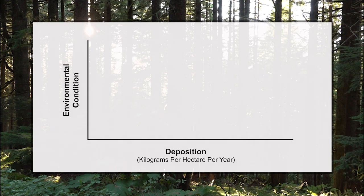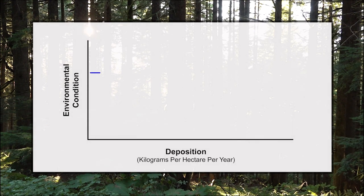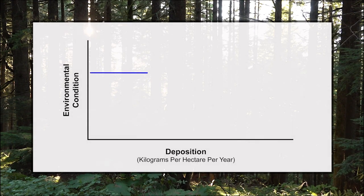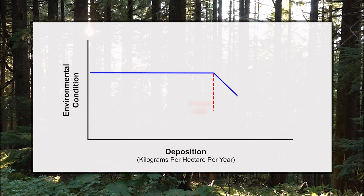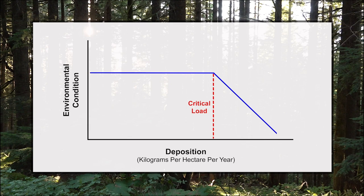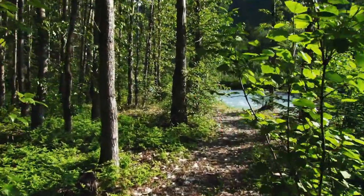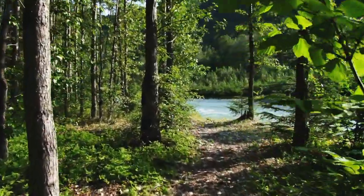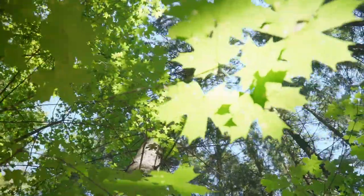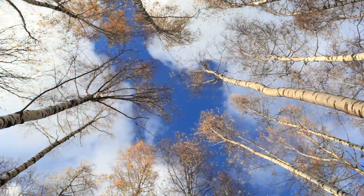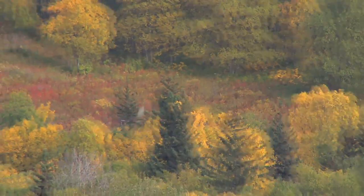This brings us to the concept of critical loads, which are used to identify when an ecosystem, or a part of an ecosystem, begins to experience harm from sulfur deposition, nitrogen deposition, or both. When the deposition from these elements reaches or exceeds the critical load, damage is expected to occur. For trees and forests, reaching this critical load puts a tree or forest at greater risk of reduced growth, health, productivity, and survival.